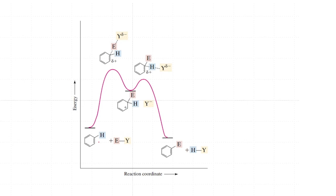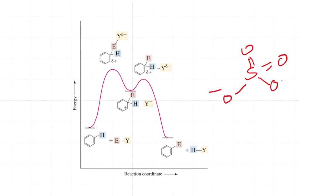To look at the energy profile, the first step of the reaction is very similar to that of a regular electrophilic aromatic substitution. The benzene ring interacts with the electrophile, producing a delta-plus species in the transition state, which gives the familiar intermediate. The next step is reaction of the conjugate base — sulfate — attacking the benzene ring and picking up a proton to give the product.